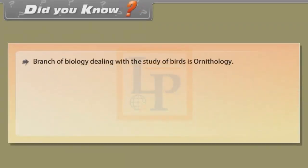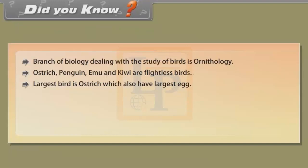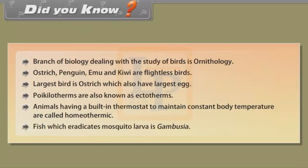Did you know? The branch of biology dealing with the study of birds is Ornithology. Ostrich, penguin, emu and kiwi are flightless birds. The largest bird is the ostrich, which also has the largest egg. Poikilotherms are also known as ectotherms. Animals having a built-in thermostat to maintain constant body temperature are called homeothermic. The fish which eradicates mosquito larvae is Gambusia.